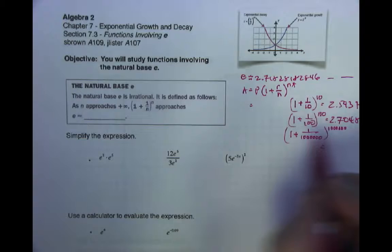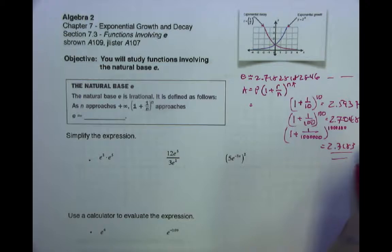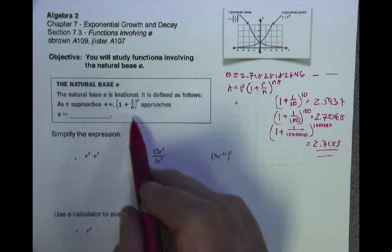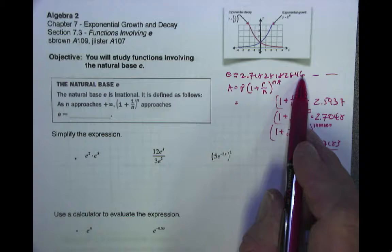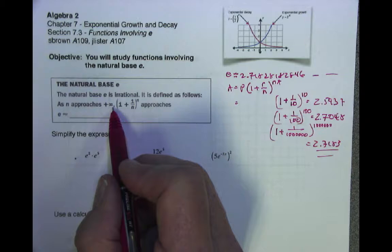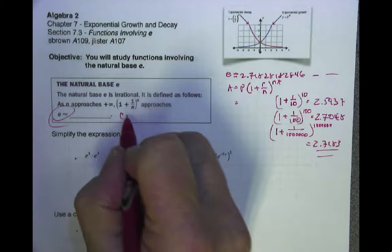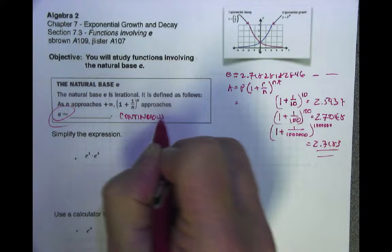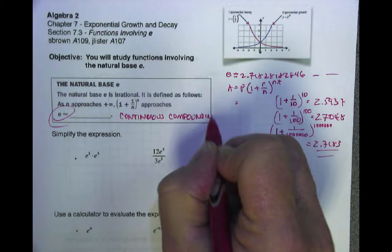So what's the whole point? The point is that the best you're ever going to get as far as compounding is infinite compounding. If you take this to infinity, this is the number you're going to get. So if you go to a bank and they give you infinite compounding, that's the best you'll ever get. That's E. E is what we call continuous compounding.